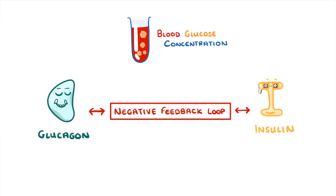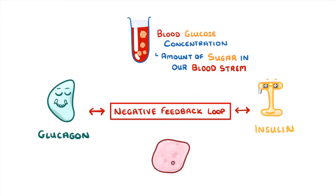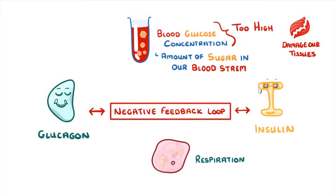Blood glucose concentration is just a fancy way of describing the amount of sugar in our bloodstream. We need a decent amount of sugar in our blood so that our cells have a constant supply of glucose they can use for respiration. However, if the blood glucose concentration gets too high, it can start to damage our tissues. So we need to keep a fine balance where it's not too high or too low.